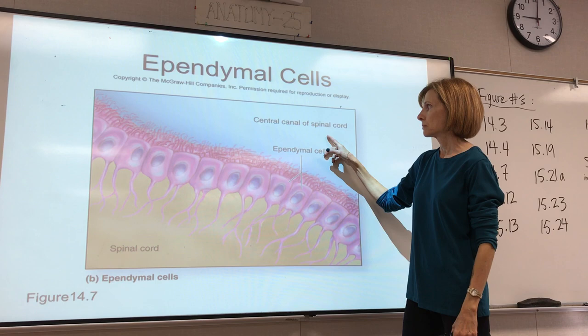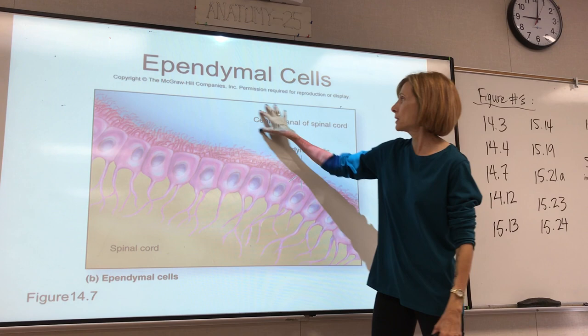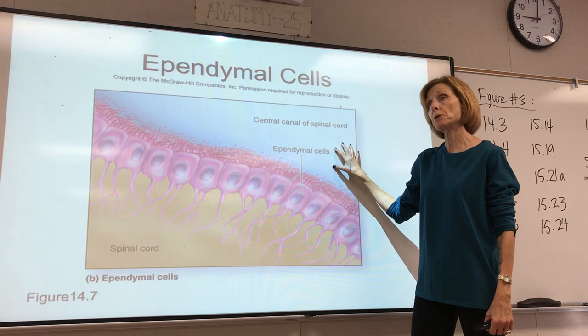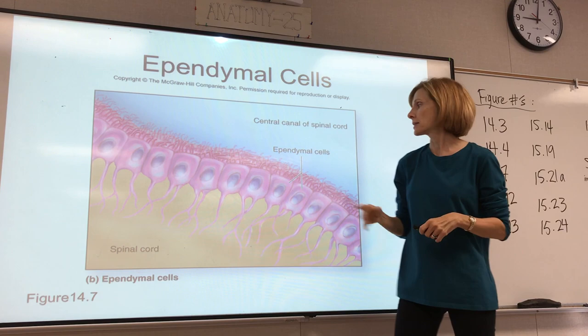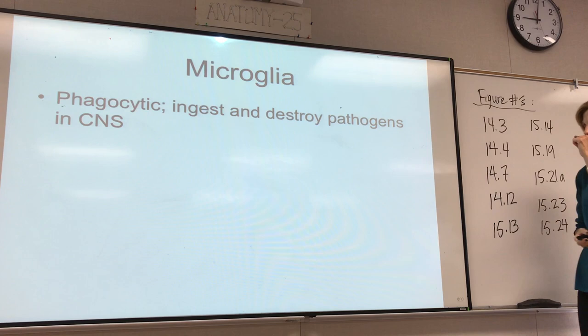This space — whether a ventricle or the central canal of the spinal cord — is lined with ependymal cells. These are the cilia here, and this would be our cerebrospinal fluid flowing through this space. As the CSF is produced, it enters the ventricles and the central canal, and the cilia move it along very slowly through those spaces.